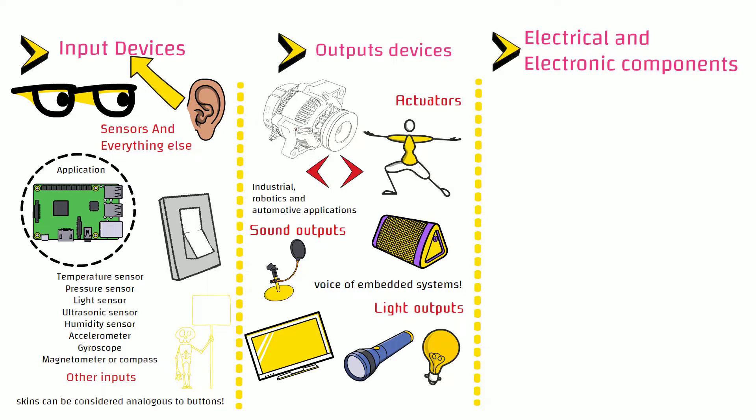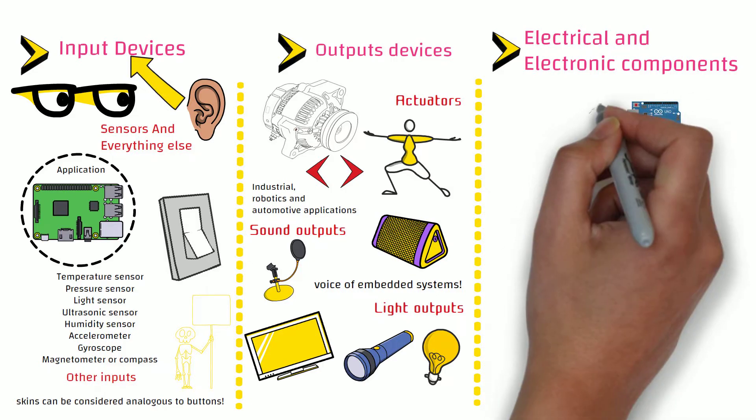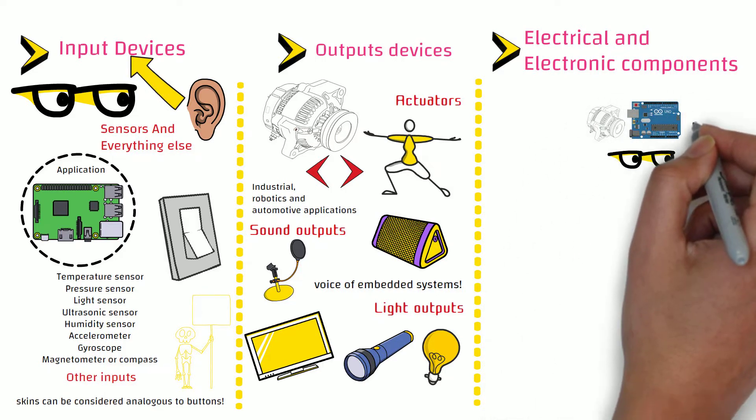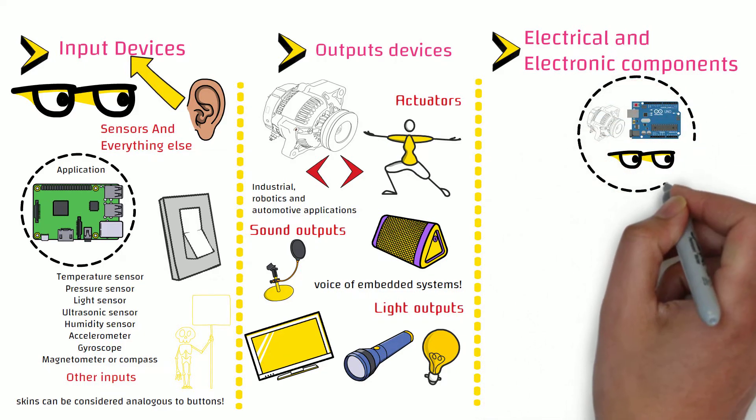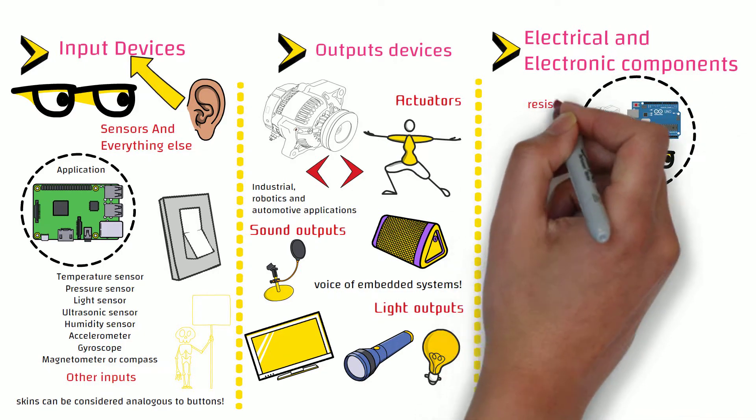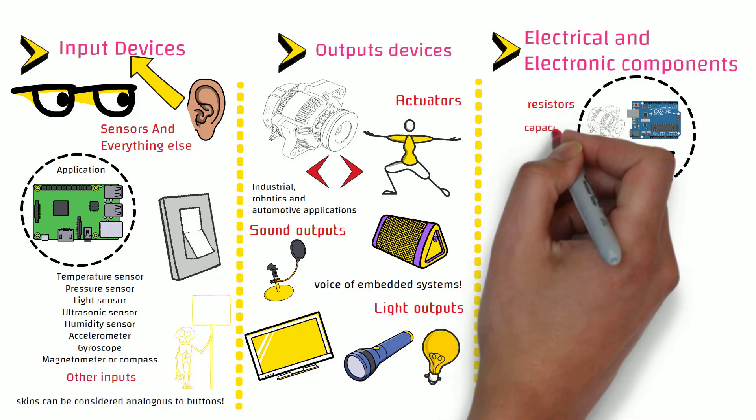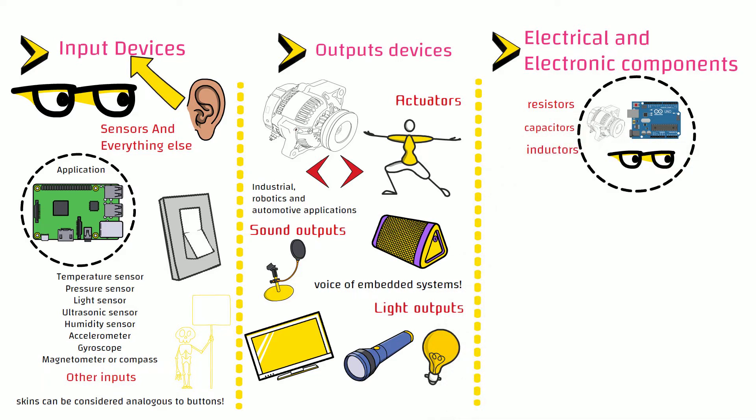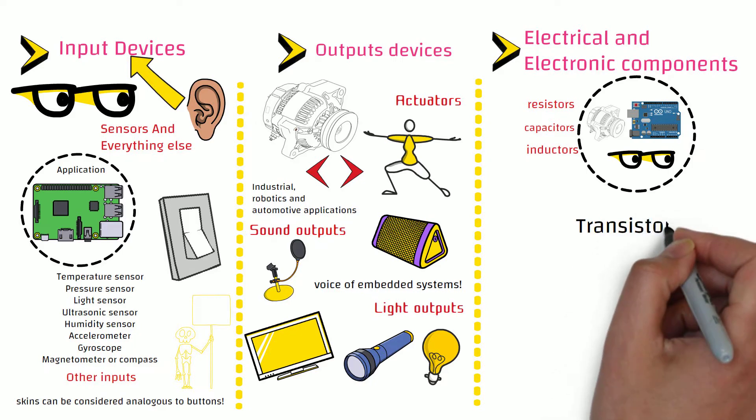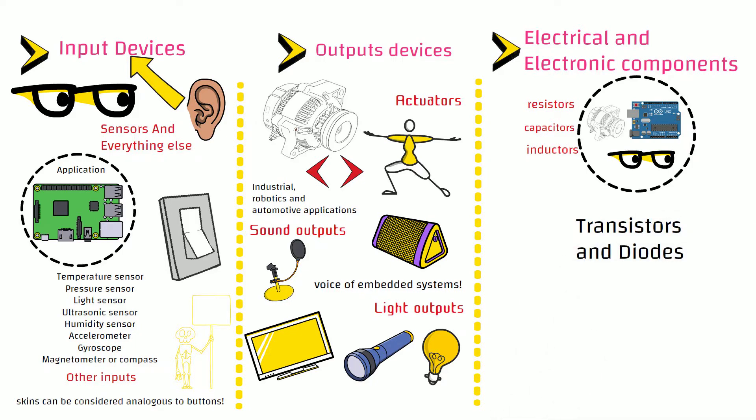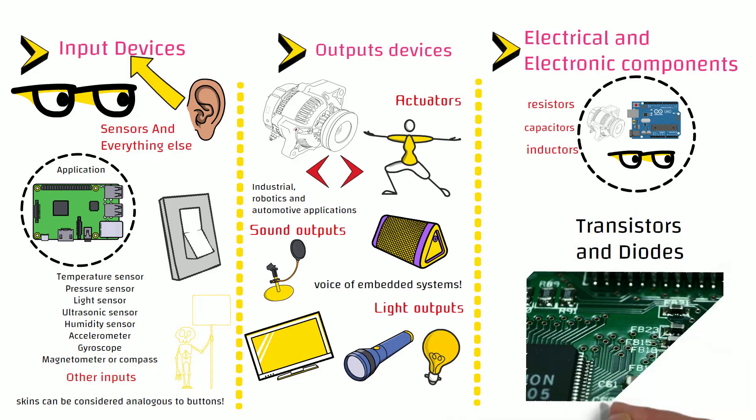Next, let us have a look at electric and electronic components. Connections between microcontrollers, sensors, and actuators can require some passive components like resistors, capacitors, and inductors. You will also see some active electronic components like transistors and diodes in a typical embedded system. All these components will look alike from distance as shown in the picture.